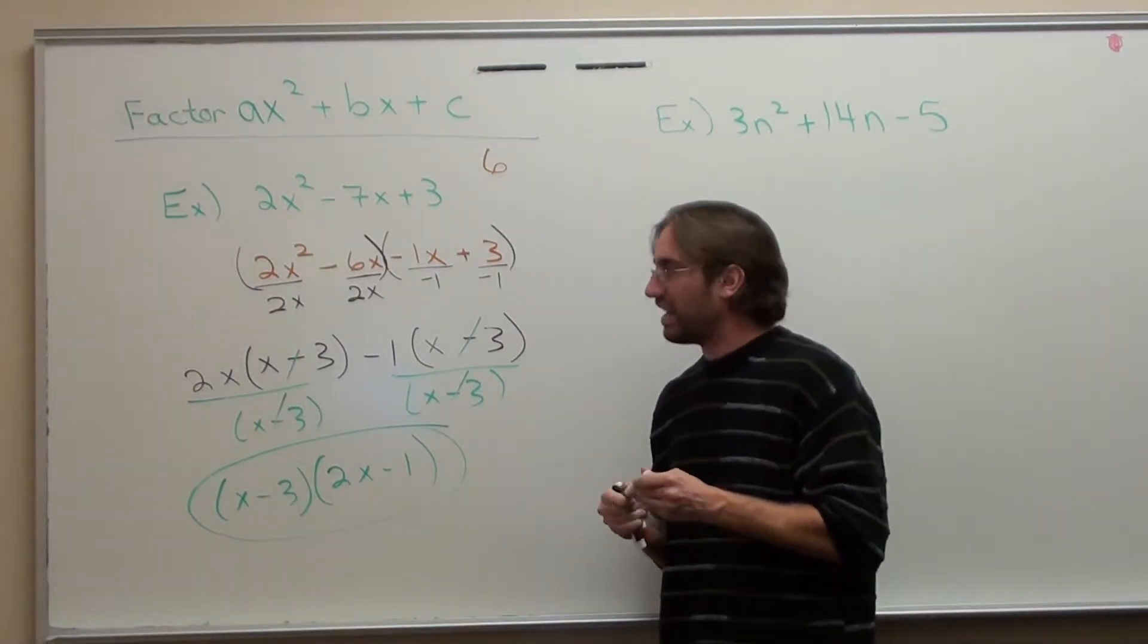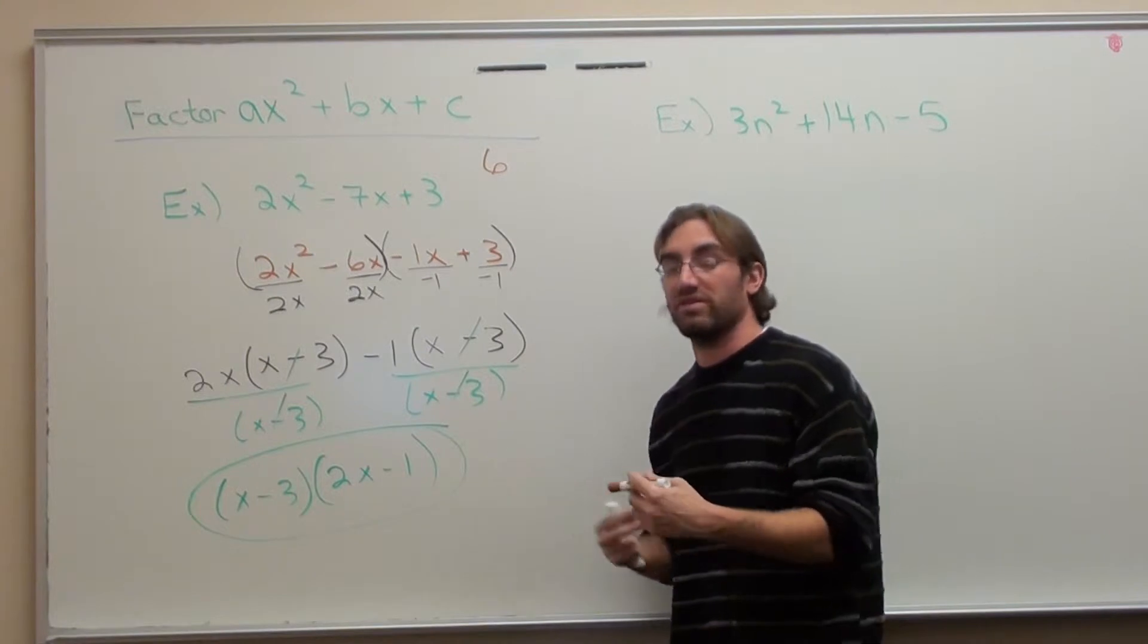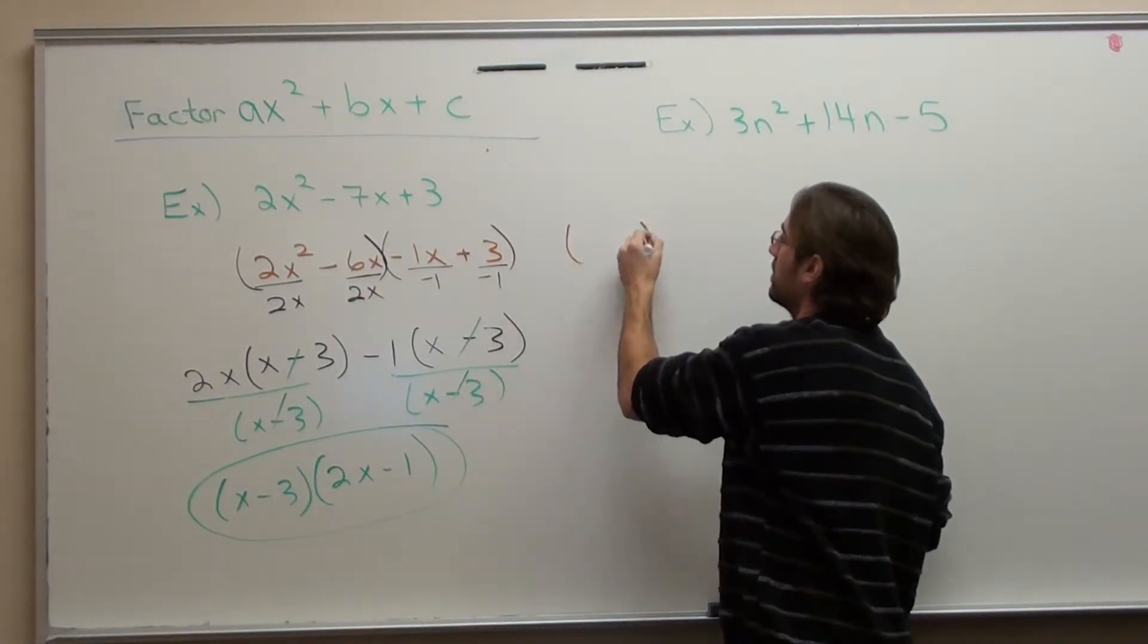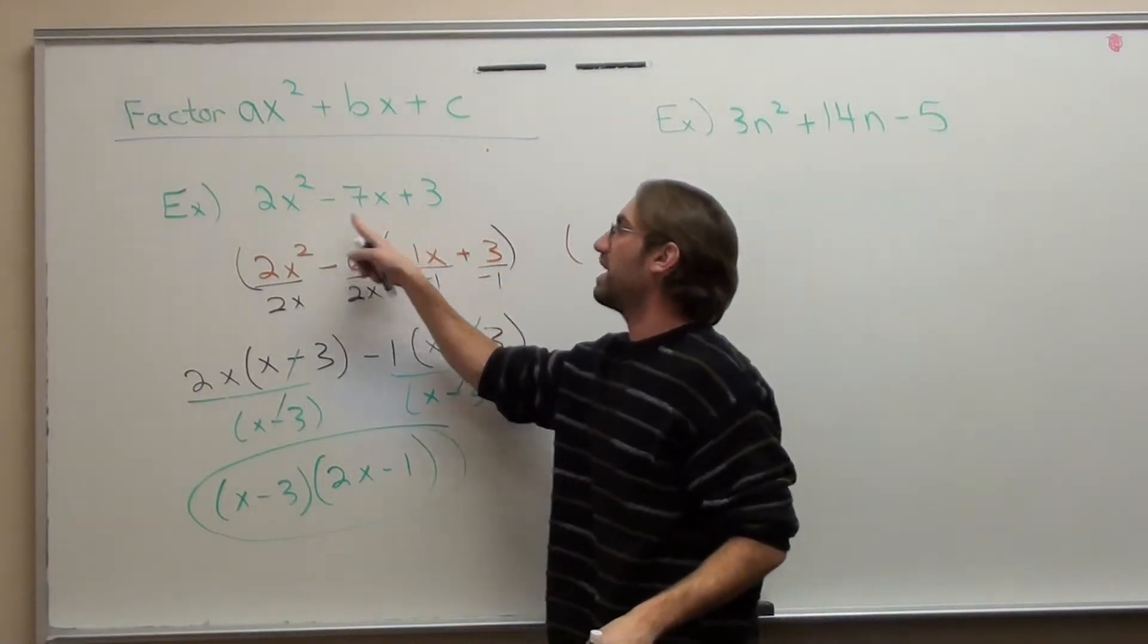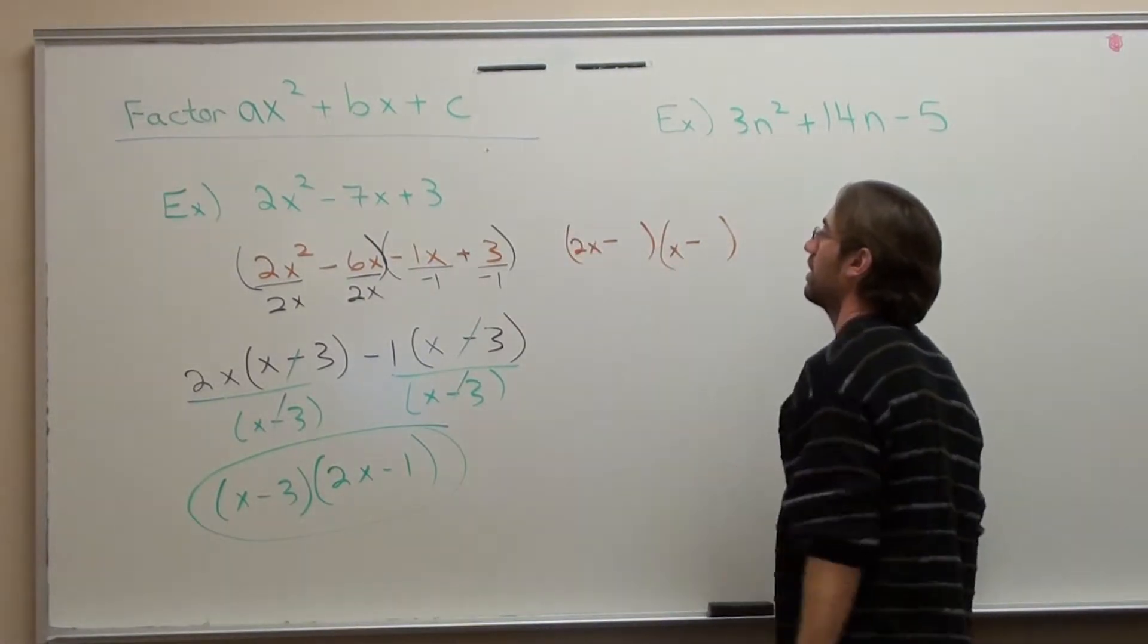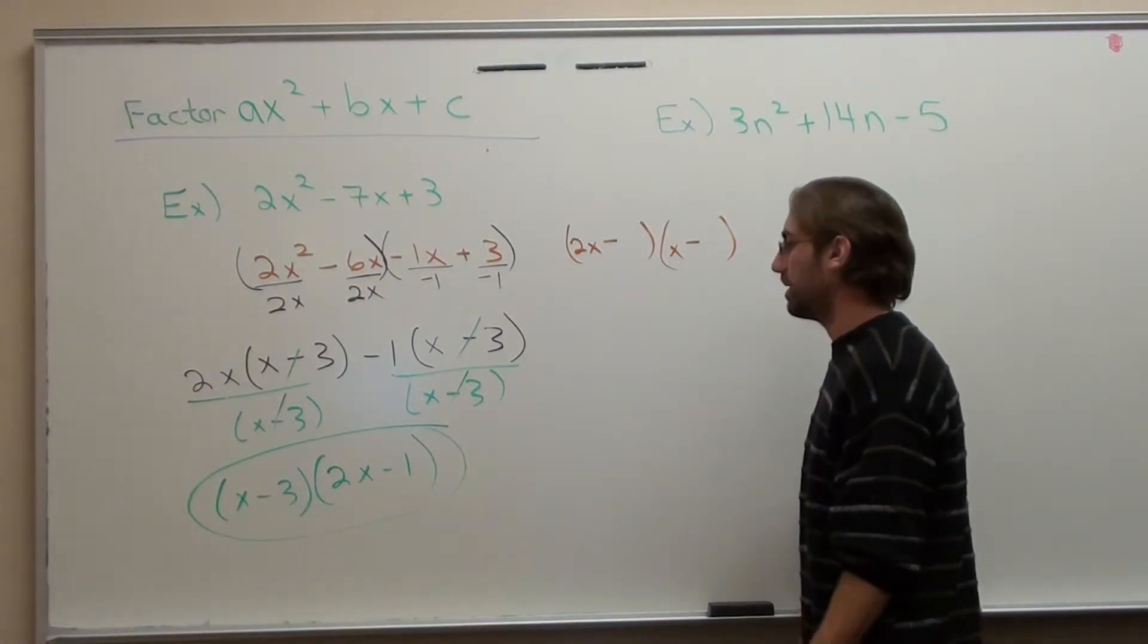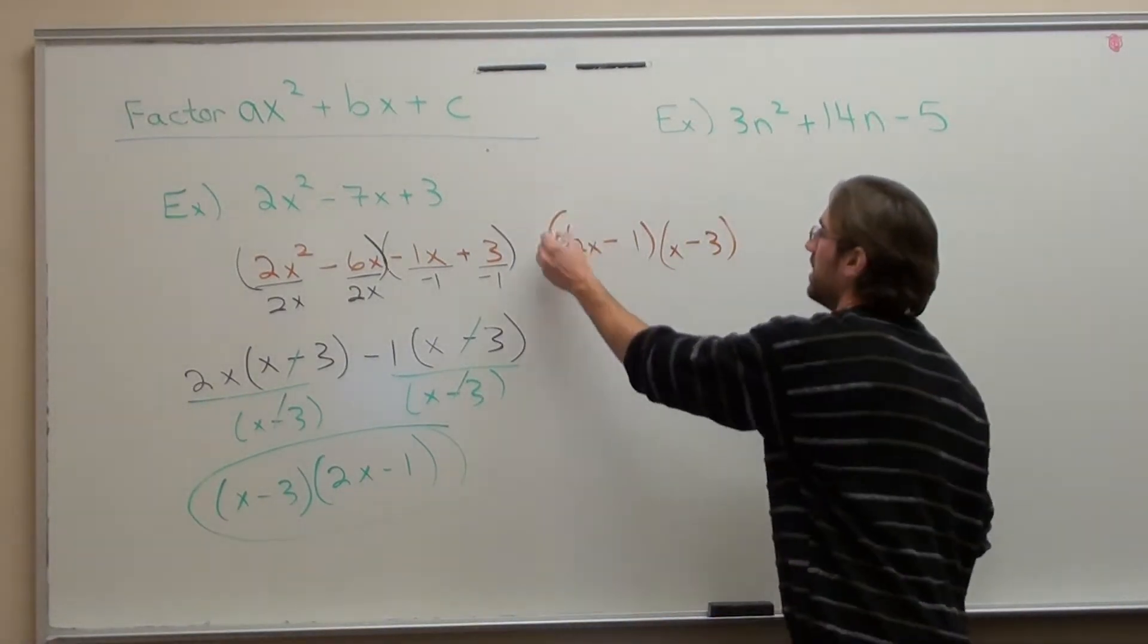When you get better at math, this happens to be an easy problem, so I wanted to start with an easy problem. But how would I do this if I was already very experienced in math? I know this is going to factor into two sets of parentheses. I know that the signs are negative, negative, because the last term is positive and the middle term is negative. I know 2x times x is 2x². What times what is 3? There's only 1 and 3. I'm going to put the 3 here and the 1 here. And that's how I would do it.